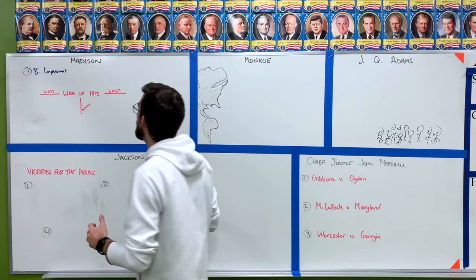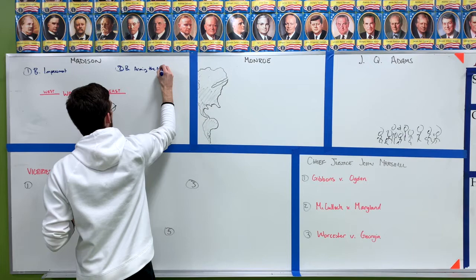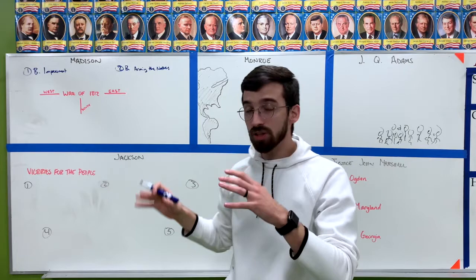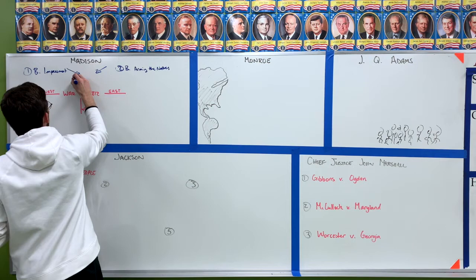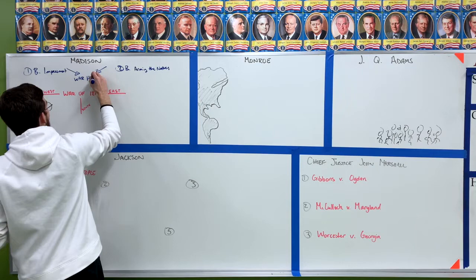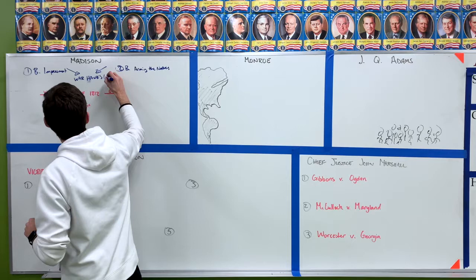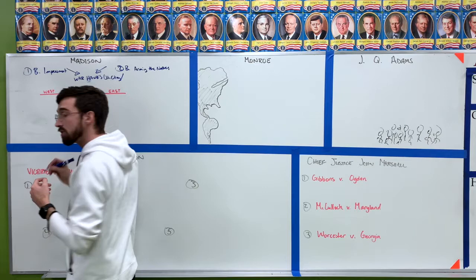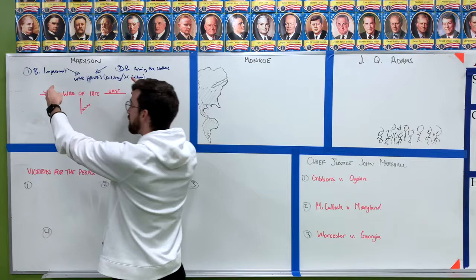They've been doing this since George Washington was president and we're angry about it. Item number two is the British are still arming the natives on the western frontier, giving the Native Americans guns so they can attack us. These two things combine with another element: the election of war hawks joining Congress. The two main war hawks are Henry Clay and John C. Calhoun.